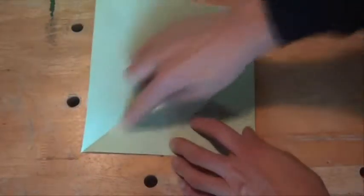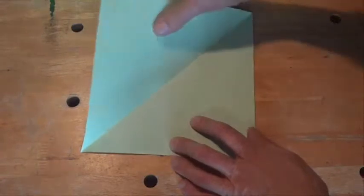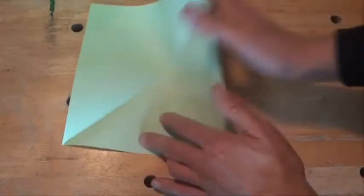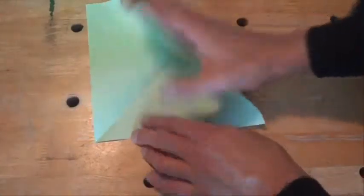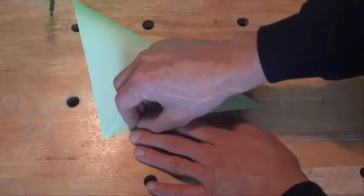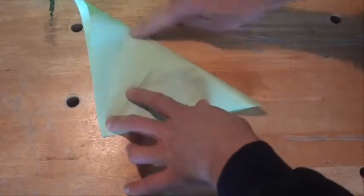So we've got a square of paper, and we've got one diagonal fold down the middle, and we'll make another diagonal fold through the other diagonal, putting that corner piece there across to the other corner, and flatten that out.